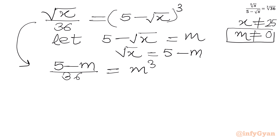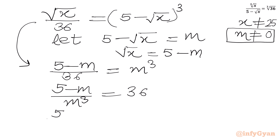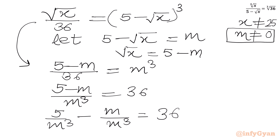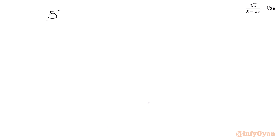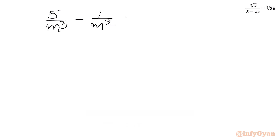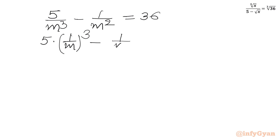Since m cannot equal 0, I can write (5 minus m) over m cubed equal to 36. Splitting: 5 over m cubed minus m over m cubed, which gives 5 times (1/m³) minus (1/m²) equal to 36.